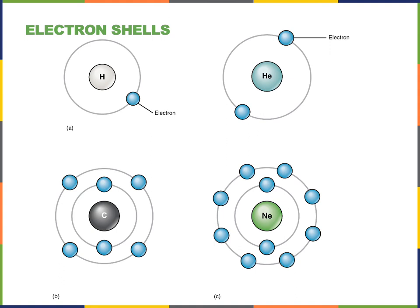If the hydrogen atom were to lose that one electron, the one proton in the nucleus would not be balanced by a negatively charged electron, and the resulting atom would be positively charged — what we call a cation, a positively charged ion. Moving to the right, the next example is the helium atom, which has two electrons in the outer shell. The outer shell is completely filled, and those two electrons balance the two protons in its nucleus, so helium is very stable and is not likely to form chemical bonds with other atoms.